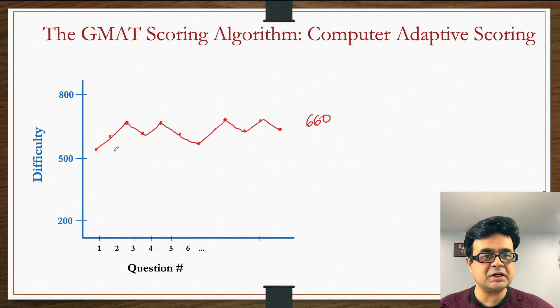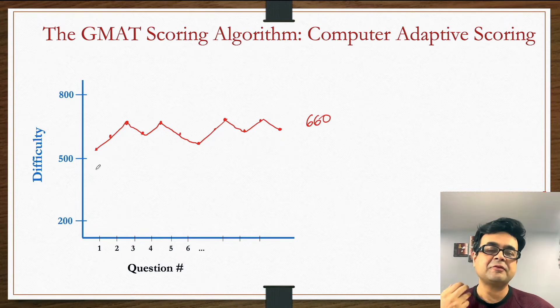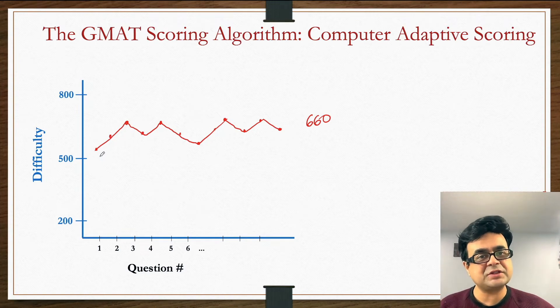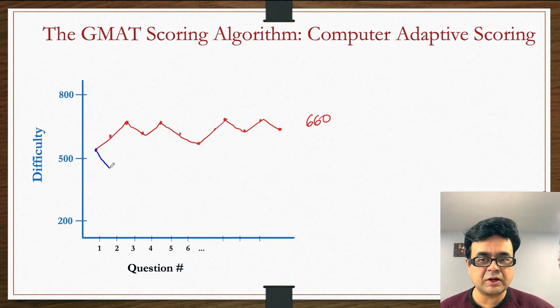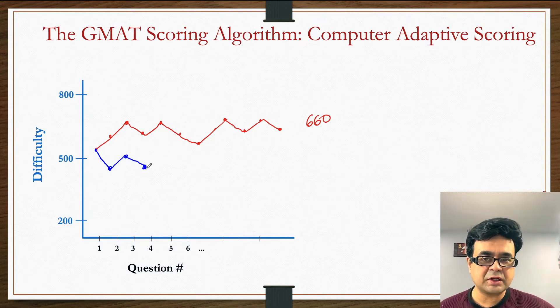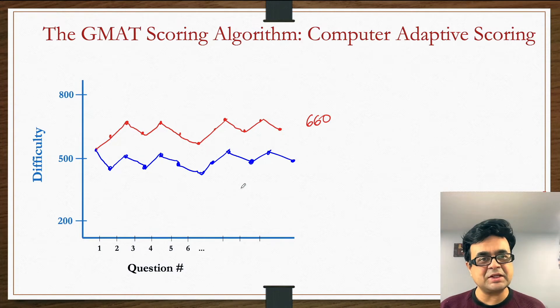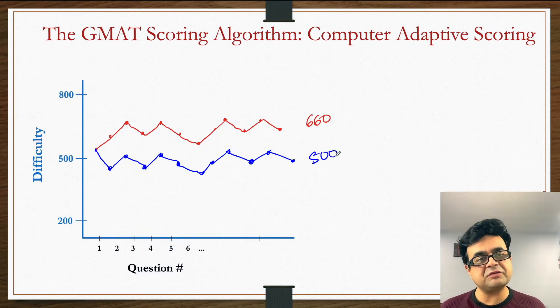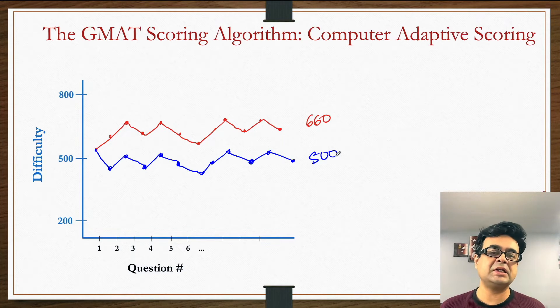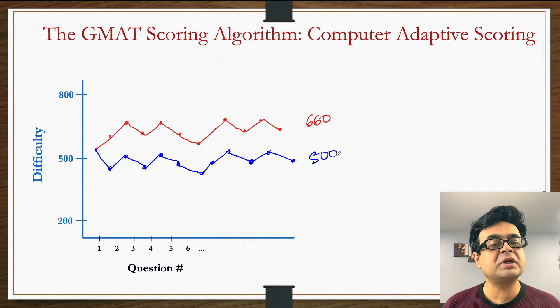Let's now assume I started differently. Instead of getting my first question right, I got my first question wrong. I followed kind of the same pattern but went down, then up, then down, then up. By getting approximately the same number of questions right or wrong, I ended up in a very different scoring range because the average difficulty of questions I was able to solve correctly was somewhere close to 500 rather than 660.